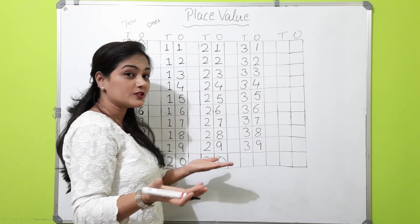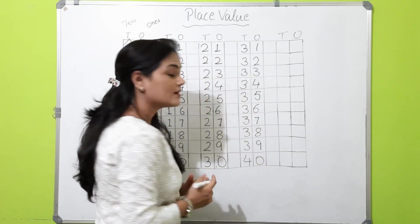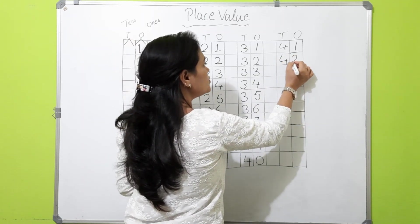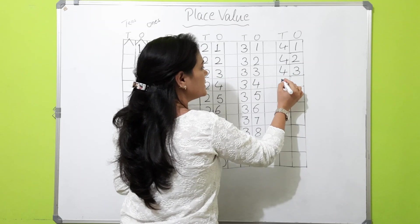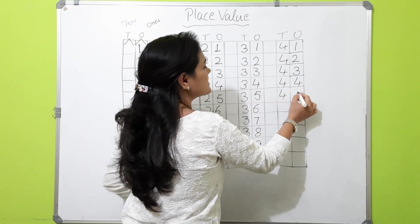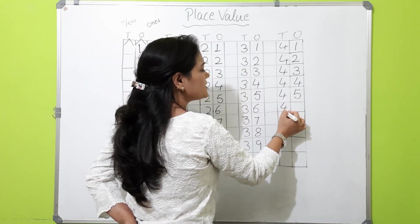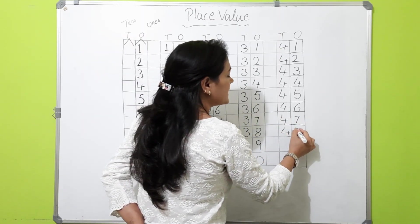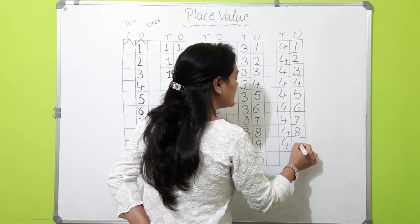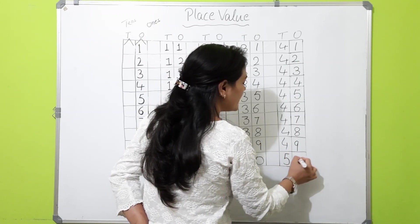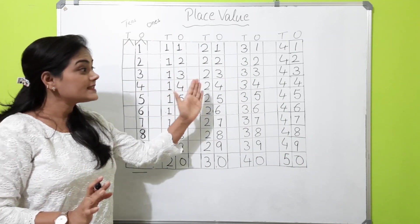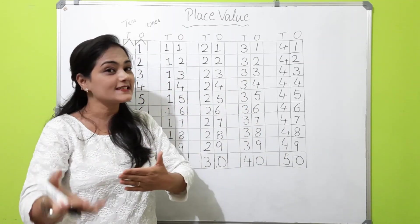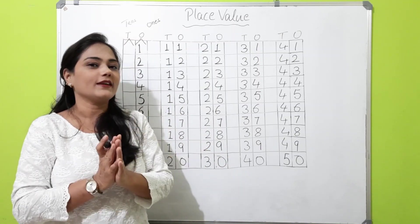And again, after nine, we get one more ten, so it becomes four tens — forty. Four tens and one — forty-one. Four tens and two — forty-two. Four tens and three — forty-three. Four tens and four — forty-four. Four tens and five — forty-five. Four tens and six — forty-six. Four tens and seven — forty-seven. Four tens and eight — forty-eight. Four tens and nine — forty-nine. Now, five tens — fifty. This is how you need to learn counting. Like that, we go to fifty, six tens, seven tens, eight tens, nine tens — we can write that easily.